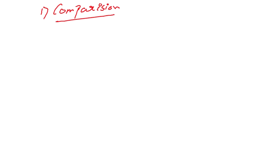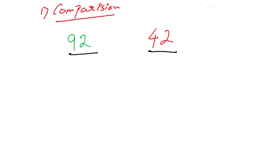Now let us see what comparison means. Comparison means when there are two values given to you, you will have to see which one is greater or which one is smaller. For comparison, you basically need two entities or two values, because you can compare only when you have two things. For example, let us take two numbers: 92 and 42. When asked to compare 92 and 42, you can find that 92 is greater than 42.